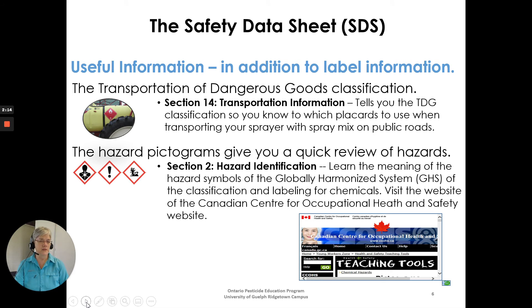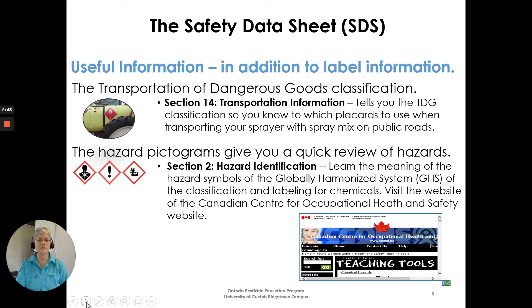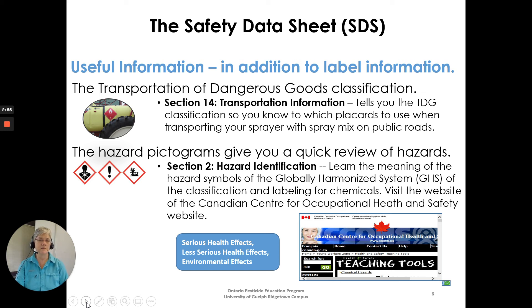The hazard pictograms give you a quick review of hazards. These are different from the label hazard symbols that PMRA uses. Under Section 2, there will be a hazard identification. You can learn the meaning of the hazard symbols of the Globally Harmonized System of Classification and Labelling for Chemicals by visiting the Canadian Centre for Occupational Health and Safety website, and there are other resources online as well. Those symbols cover serious health effects, less serious health effects, and environmental effects — some of the ones you will see on pesticides.